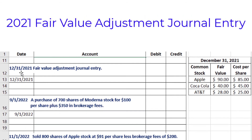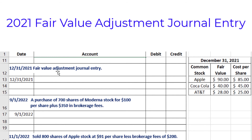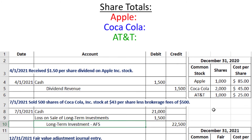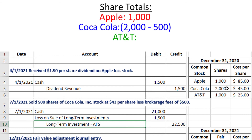Next, on the last day of the year, December 31, 2021, we need to make the fair value adjustment journal entry based on the given fair value information. The first step is to determine how many shares of each stock we own. Looking back at the previous chart, for Apple and AT&T there were no purchases or sales, but for Coca-Cola, 500 shares were sold on 7-1-2021. So the new totals are 1,000 for Apple, 1,500 for Coca-Cola (2,000 minus 500), and 1,000 for AT&T.